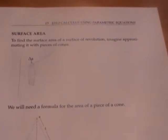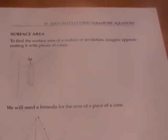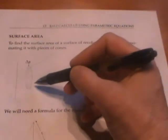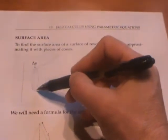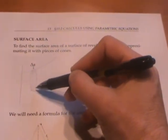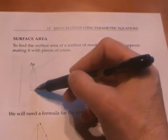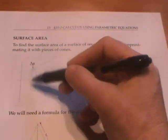Our goal for this section is to derive a formula for the surface area of a surface of revolution by approximating that surface of revolution with little bands that are pieces of cones, pieces of circular cones.